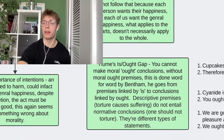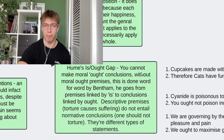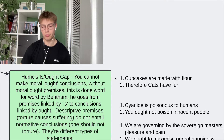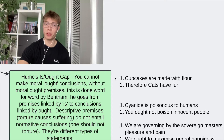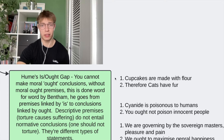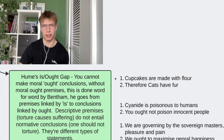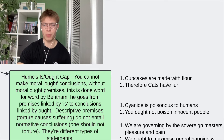The final criticism is Hume's Is-Ought Gap. I'm going to try and explain this in the most simple way possible. It's a complex idea, but we'll just apply it to utilitarianism and hopefully we'll be able to understand this. I've got three arguments here.